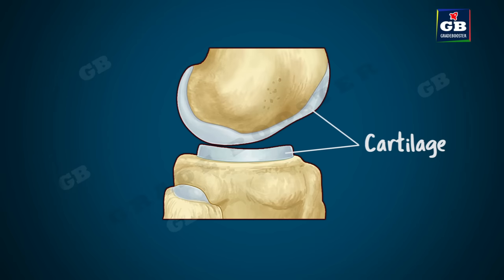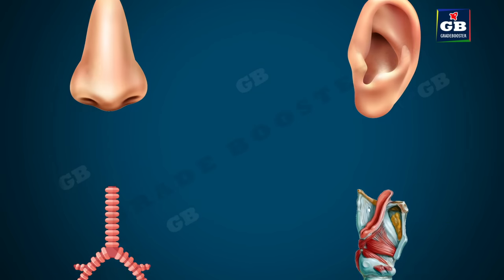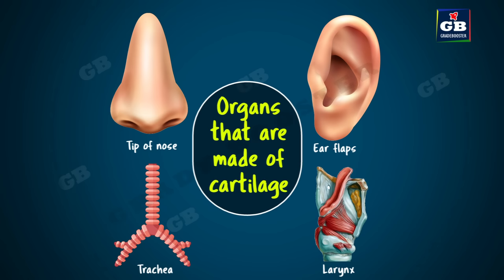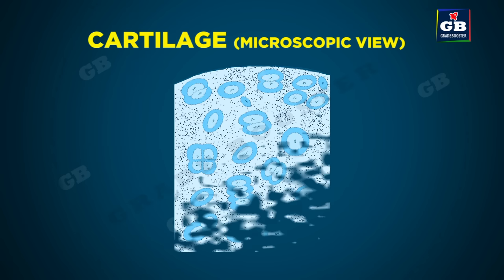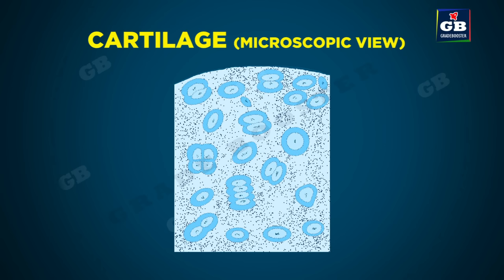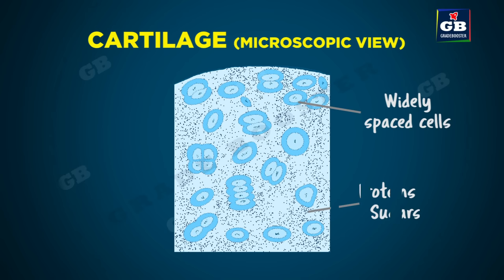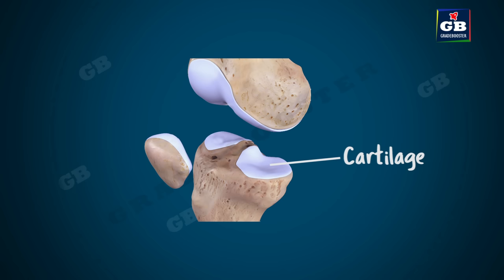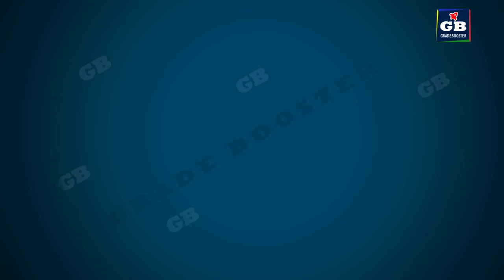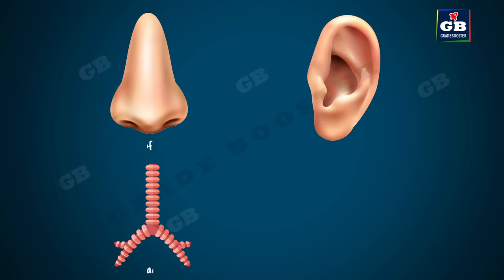Now let us see about cartilage. We have a soft bone at the tip of our nose, ear flaps, etc. This soft, flexible, bone-like material is called cartilage. It is a kind of connective tissue. The cells of cartilage are widely spaced. The matrix of cartilage is composed of proteins and sugars. The surface of bones at the joints is smoothened by cartilage. Cartilage is also found in the nose, ear, trachea, and larynx.